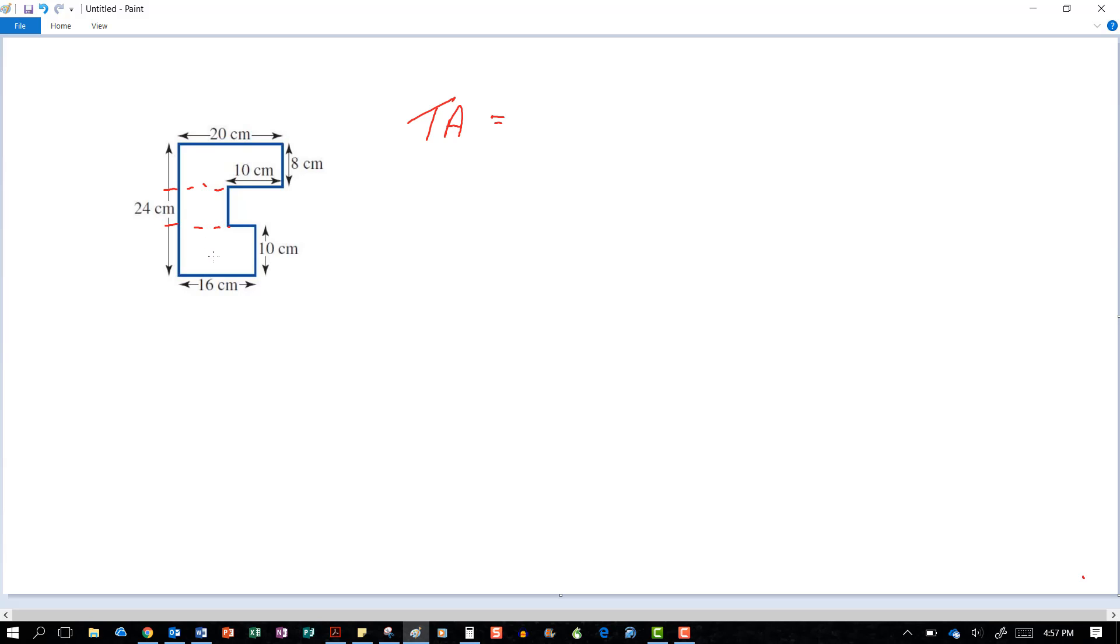but this time we're going to think of it as being one large rectangle and we're going to take out these two areas. So our rule will be the larger rectangle minus the small rectangle and another small rectangle.